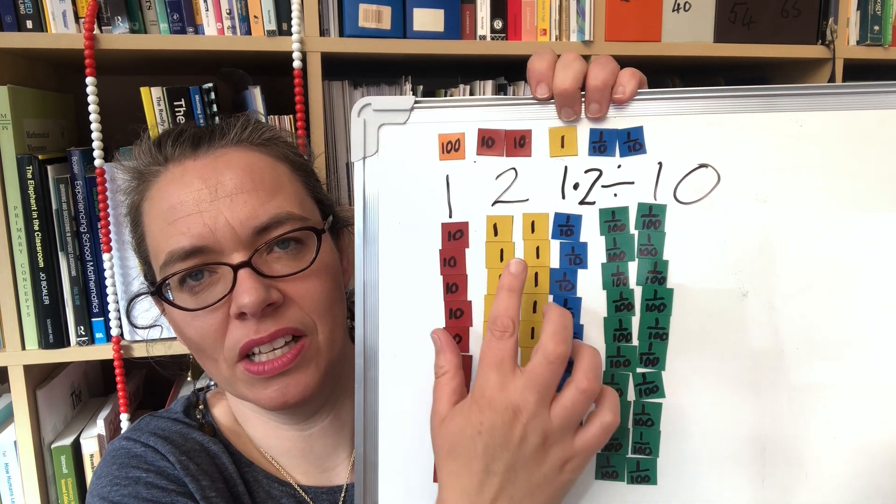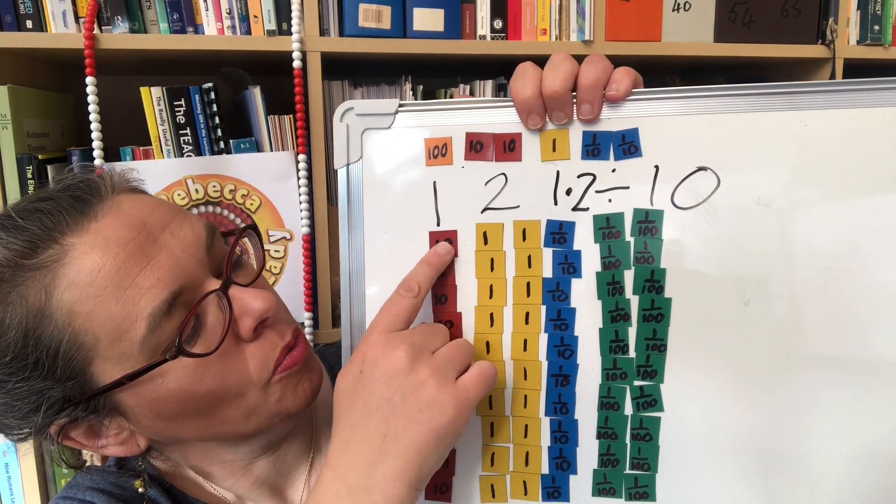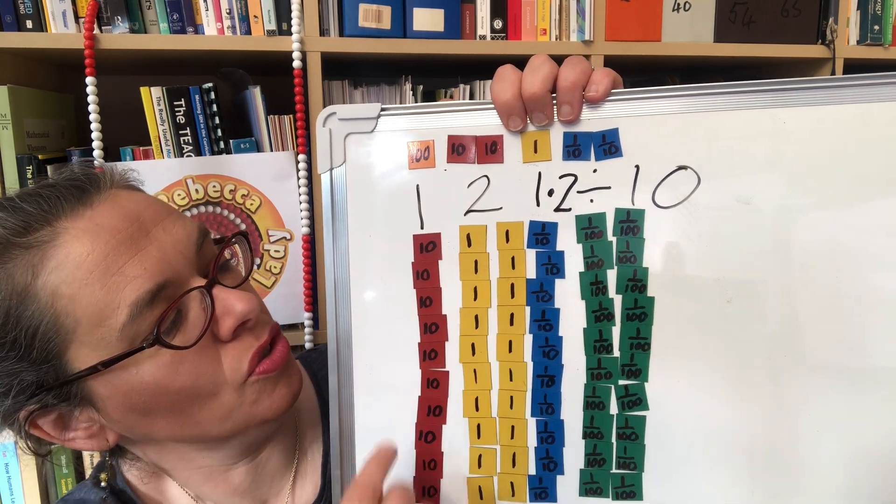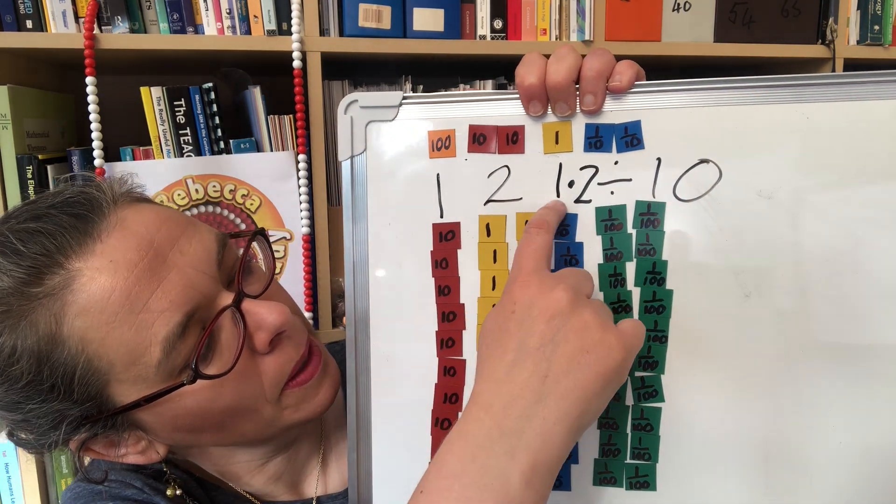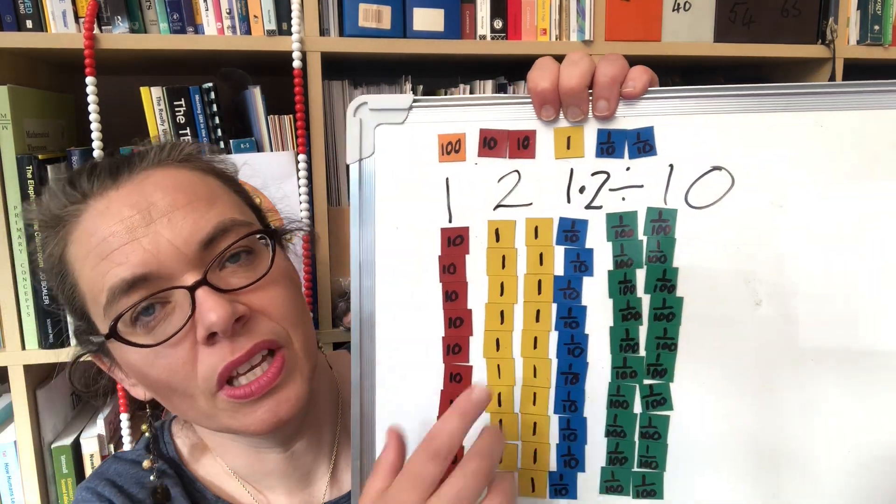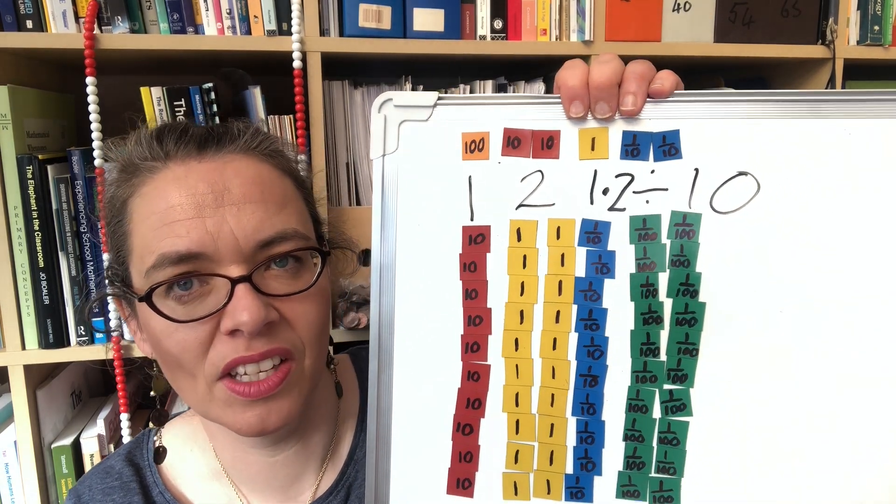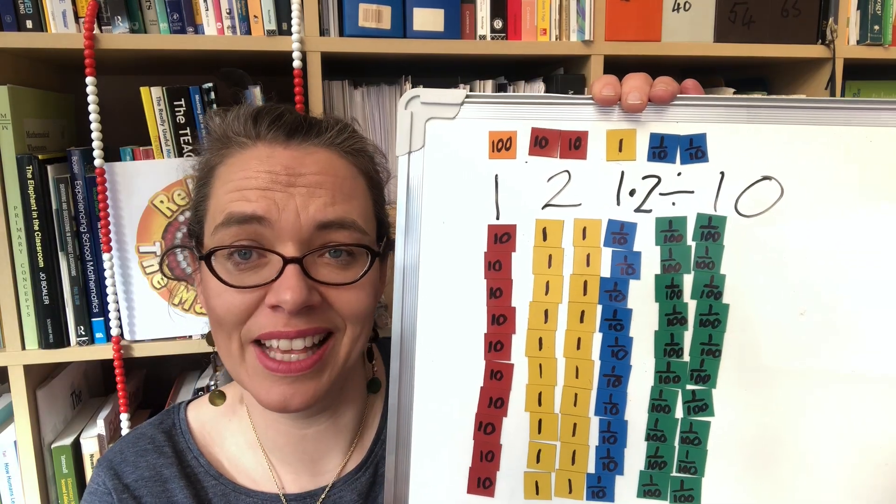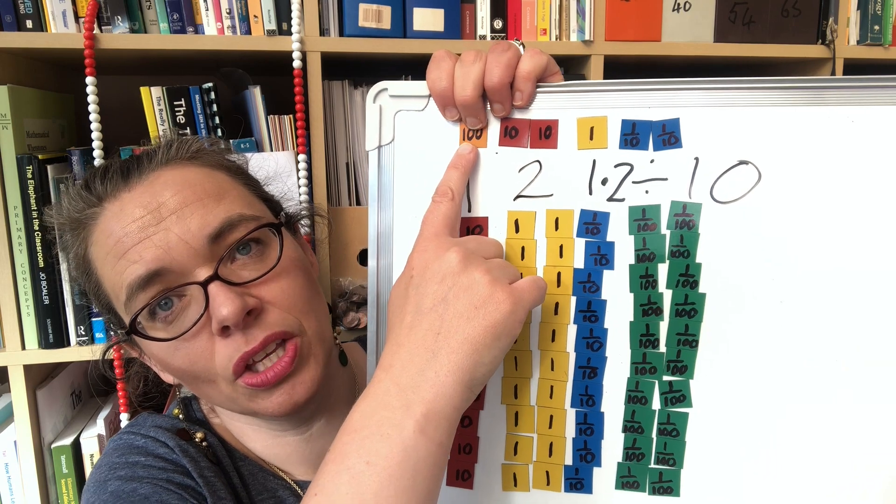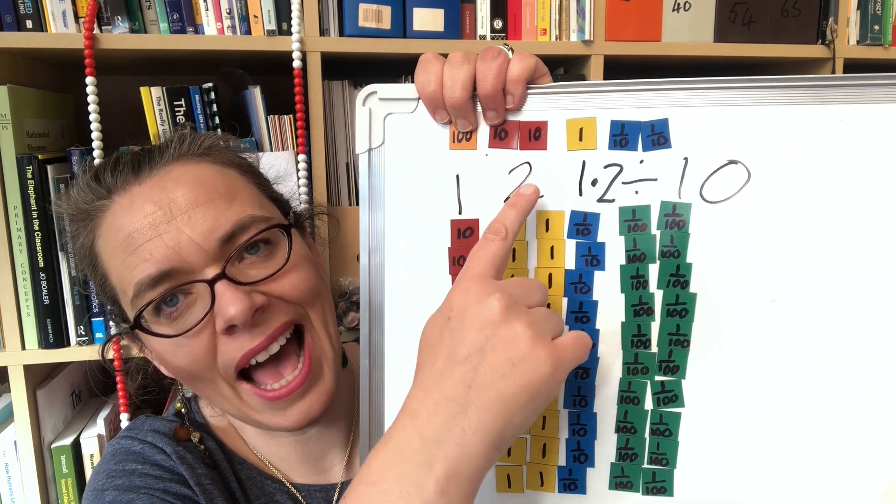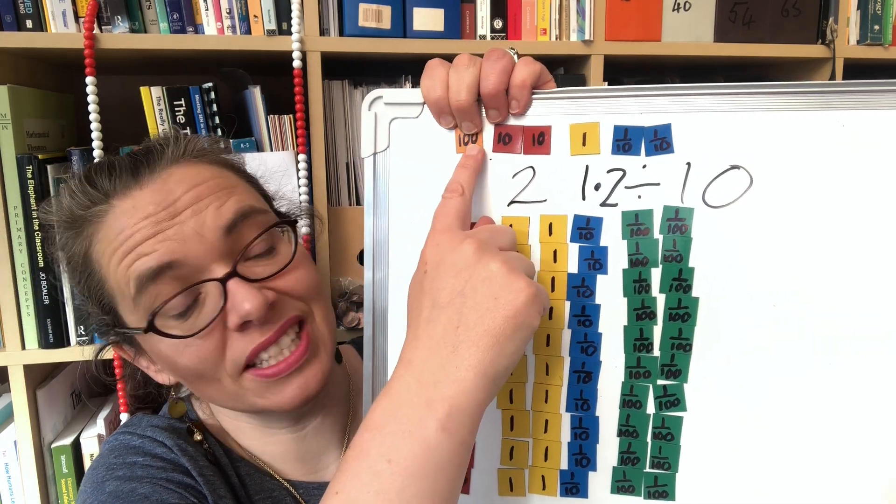Phew. And then we can divide this by 10 by sharing fairly into 10 equal parts because each row here is one part of your answer. So the answer to this question is 10, 2 ones, 1 tenth and 2 one hundredths which is 12.12. So we can see that the digits have moved one place to the right.